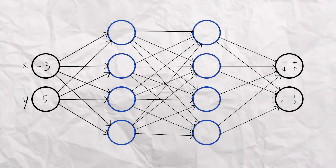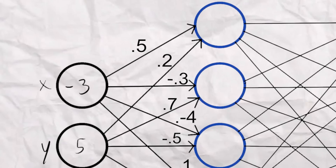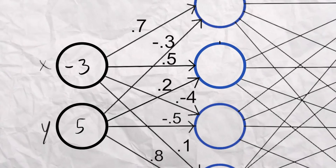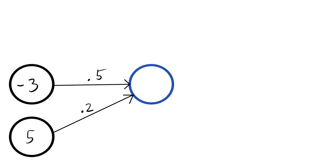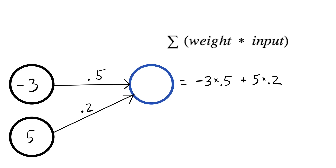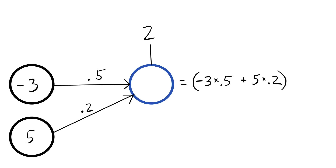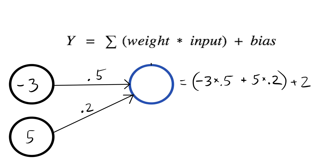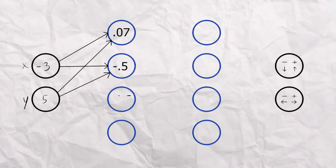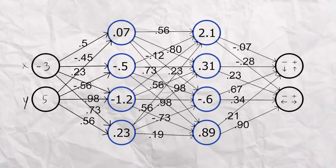Here is a neural network — each one of these lines has a number associated with it called the weight, and each circle is called a node. To calculate the value of a node, each weight gets multiplied by the input it is connected to, and all of those numbers get added together: the sum of the weights times the inputs. The node also has a value called the bias, which simply gets added to that sum, so the full equation is: sum of (weights × inputs) + bias. Once a neural network is trained it is literally just a list of weights and biases, and these numbers only change between rounds when mutations happen.